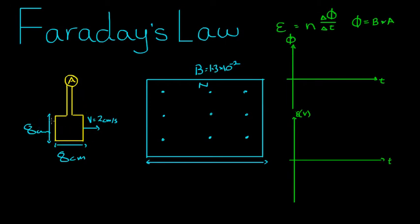So we have a little loop, eight centimeters by eight centimeters, moving at two centimeters per second across the face of this north pole of a magnet. The strength of the magnetic field across this face here is equal to 1.3 times 10 to the negative 2 Teslas, and the field is coming out of the page. Assuming the strength of the magnetic field outside here is zero.